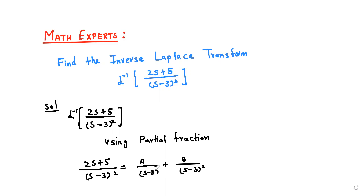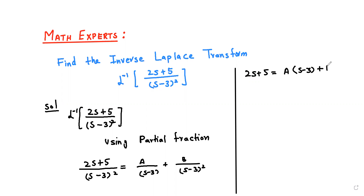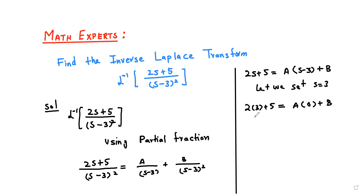Now we find the values of A and B. We use the equation: 2s + 5 = A(s minus 3) + B. Now solving for B, we set s equal to 3. When s = 3: 2(3) + 5 = A(0) + B, so 6 + 5 = B, which gives us B = 11.